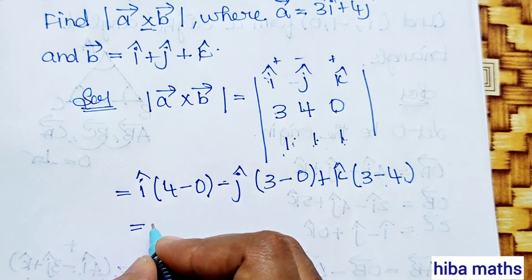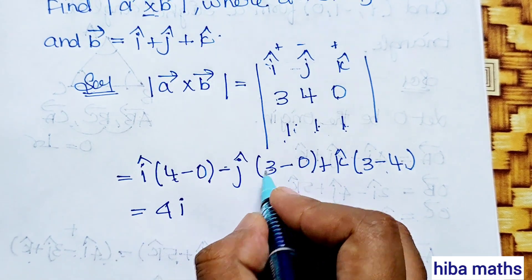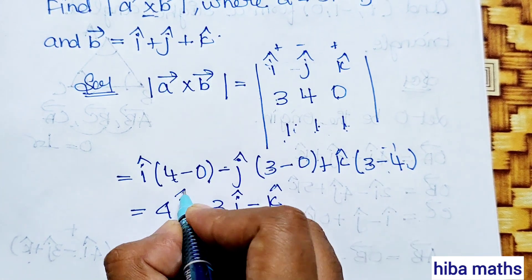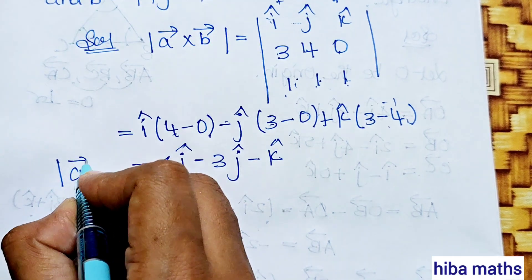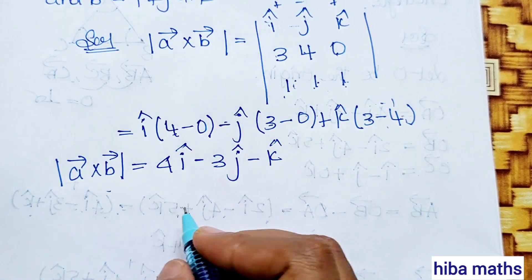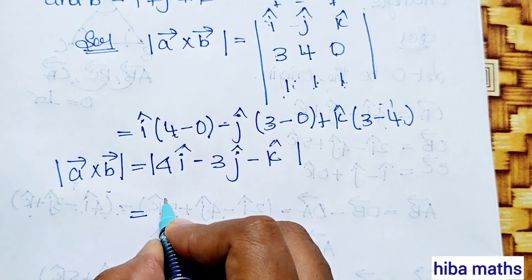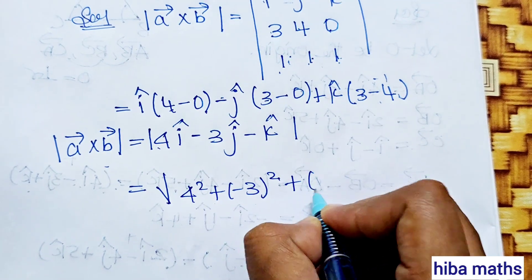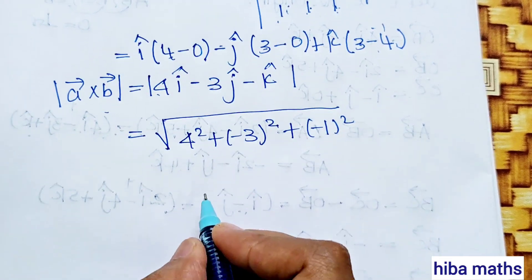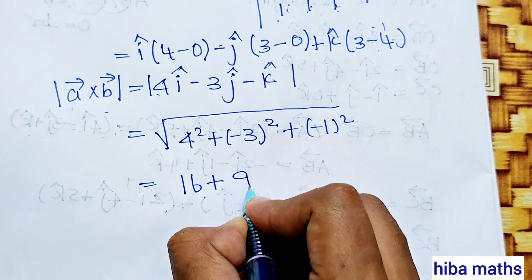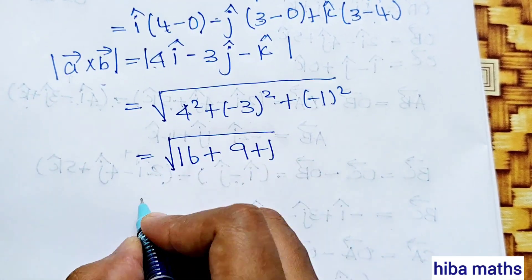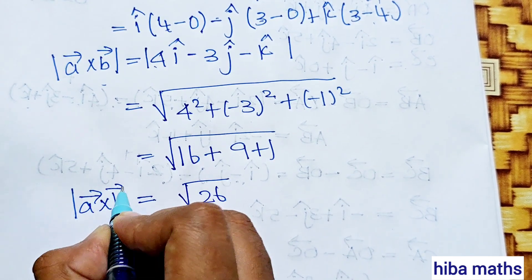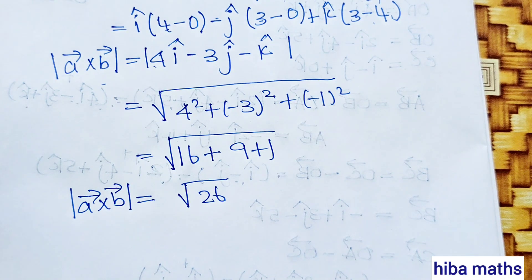So a × b = 4i - 3j - k. The modulus of a × b = √(4² + (-3)² + (-1)²) = √(16 + 9 + 1) = √26. This is the value of |a vector × b vector|.